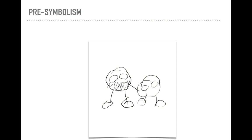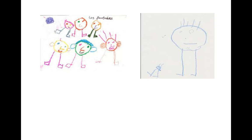Stage two is known as the pre-symbolic stage. This usually occurs between the ages of three and four years old. At this stage of artistic development, children are beginning to see a connection between the shapes they draw and the physical world around them. Circles and lines may be described as people or objects. Children are starting to make a connection between communicating and their drawings.